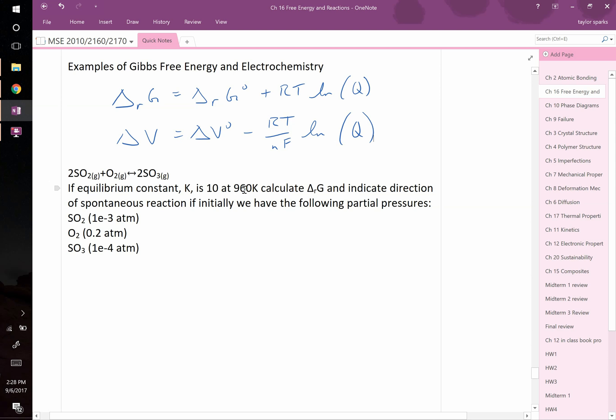The first question is given as follows. If we have 2 moles of SO2 gas reacting with 1 mole of O2 gas to form 2 moles of SO3 gas, and we are given that the equilibrium constant for this reaction is 10 at 960 Kelvin, we are asked to calculate what would be delta RG, the change in Gibbs free energy for the reaction, and indicate the direction of spontaneous reaction if we initially have the following partial pressures.